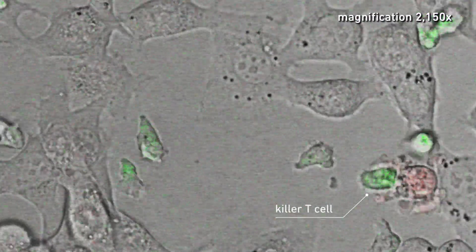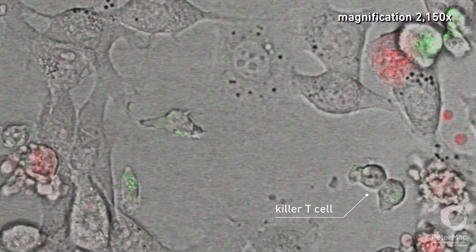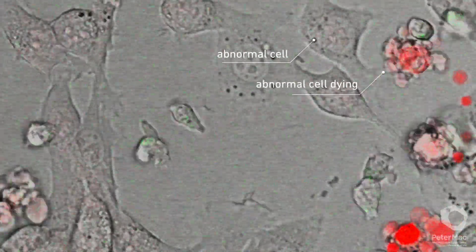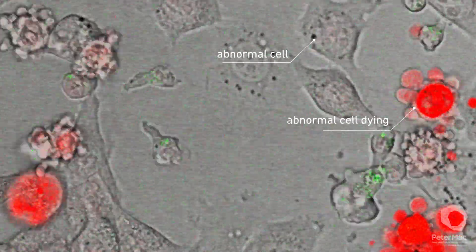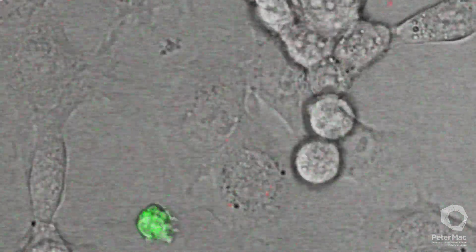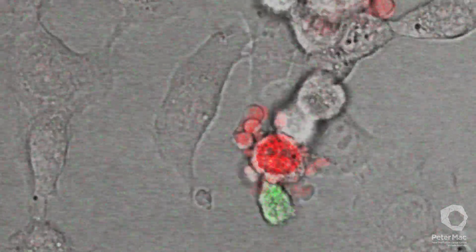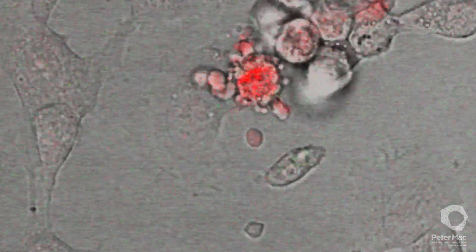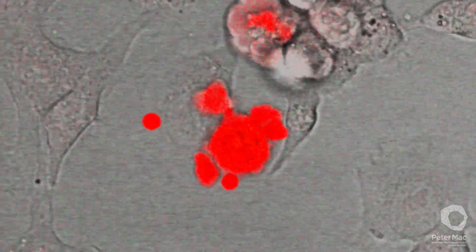The killer T cell shown here in green releases deadly toxins which destroy the abnormal cells, which turn red. Killer T cells are therefore a very important defense mechanism against disease, and are constantly on the lookout for abnormalities and foreign invaders.